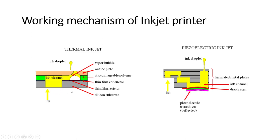In thermal inkjet printing, electricity is passed through a thin film resistor to heat it enough to boil the ink. The electricity is conducted through a conductor and passed through the thin film resistor, heating it up and causing the ink to heat as well. This heat is enough to boil the ink to the point that it creates a small vapor bubble closest to the resistor, causing an expansion inside the airtight system which exerts pressure on the liquid and pushes ink through the nozzle toward the paper.